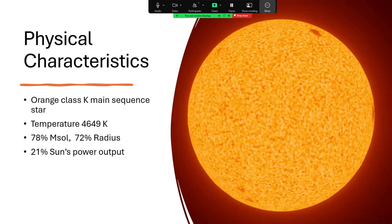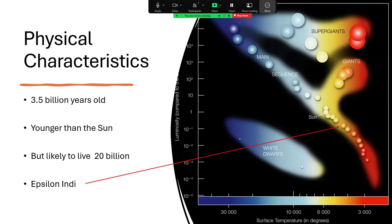Very appropriate orange dot because it is an orange K-class main sequence star, just 4,649 Kelvin, so cooler than the sun. Around about 80% of the mass and 70% of the radius, but that lower mass goes with a much lower overall power output, just 21% of the total power. On the good old Hertzsprung-Russell diagram, there it is, just in the top end of the orange star group, somewhat cooler and fainter than the sun.